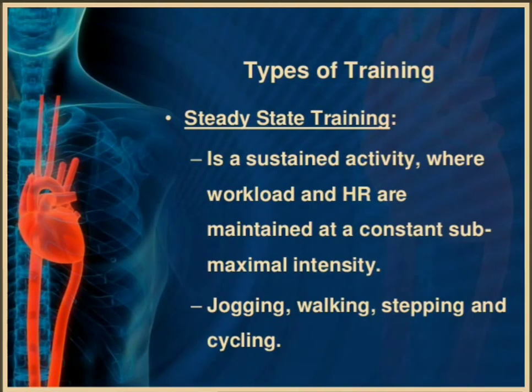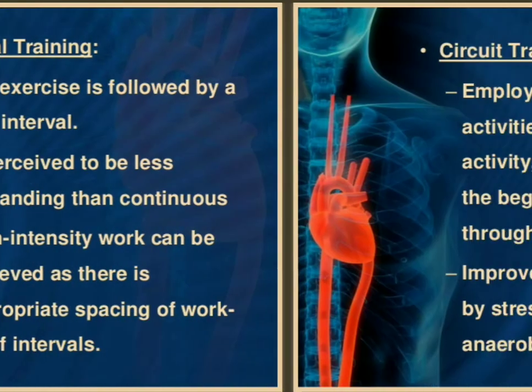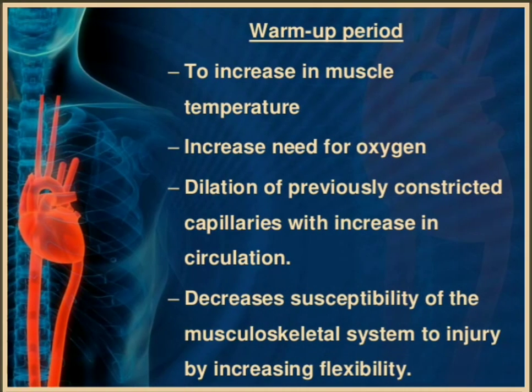Types of training in Phase 3: steady-state training — sustained activity where workload and heart rate are maintained at a constant sub-maximal intensity, such as jogging, walking, stepping, and cycling. Interval training — exercise followed by a rest interval, perceived as less demanding than continuous high-intensity work, achieved with appropriate spacing of work-relief intervals. Circuit training — a series of exercise activities repeated from the beginning, improving strength and endurance by stressing both aerobic and anaerobic systems.